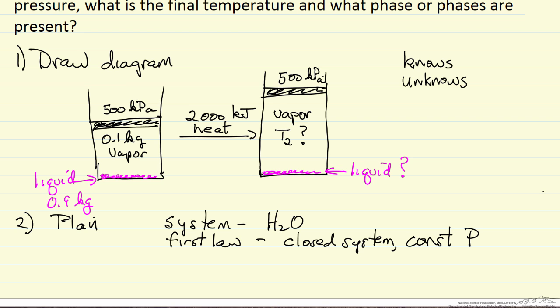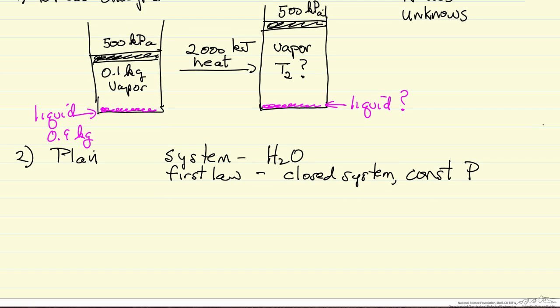Closed system at constant pressure. And so this means to solve the first law we're going to need initial final conditions, so we're going to use the steam tables to look up the properties of steam at the different conditions, and then we're going to determine what is the final state, and that means temperature and phases present.